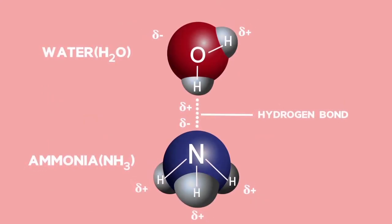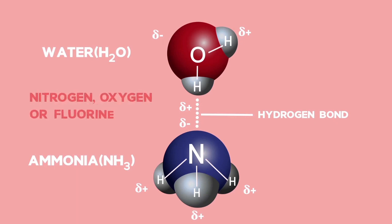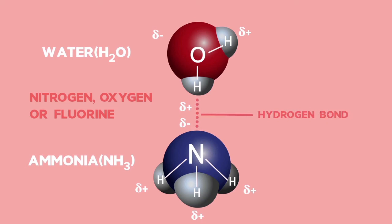To summarise hydrogen bonds: when hydrogen is covalently bonded to nitrogen, oxygen, or fluorine in a molecule, the molecule will usually be capable of forming hydrogen bonds between molecules.